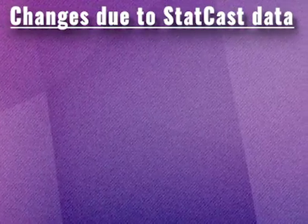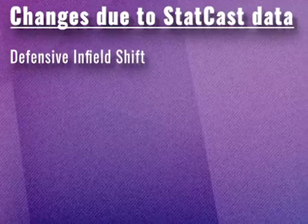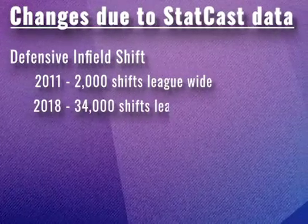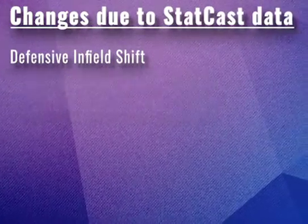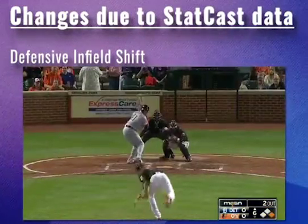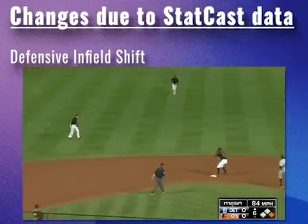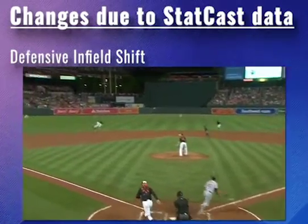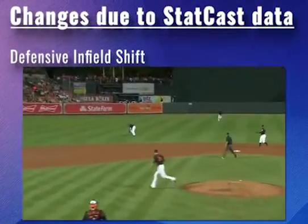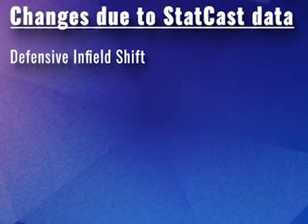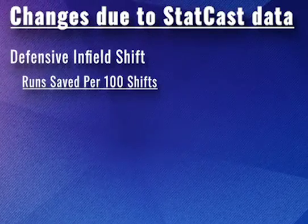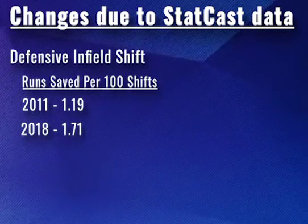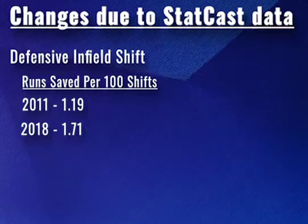Another way the game of baseball has changed because of StatCast is the popularity of the shift. Going back to 2011, there were approximately 2,000 defensive shifts throughout the league. Fast forward to 2018 and that number balloons to 34,000. The result? Players hitting the ball hard right at perfectly positioned defenders. One way to beat the shift: hit the ball over the fence. So players are incentivized to swing in a winner-take-all fashion, furthering the three true outcome phenomenon. The shift has been an effective measure — its efficiency increased from saving 1.19 runs every 100 shifts in 2011 to 1.71 runs in 2018, indicating teams are better utilizing data for on-field success.